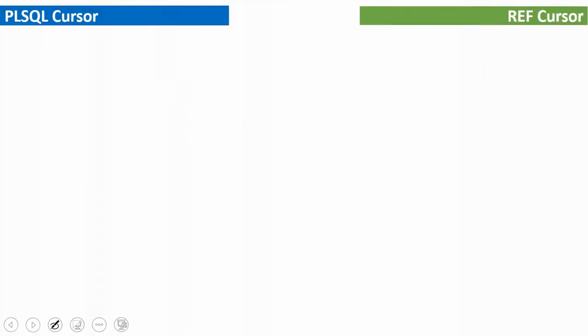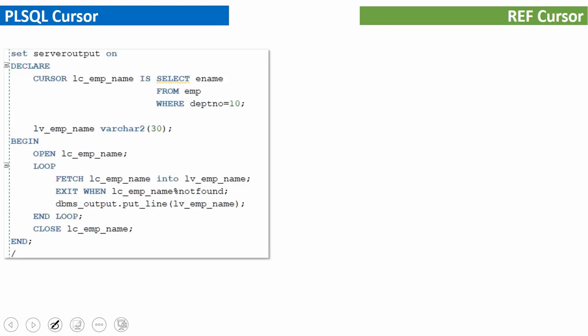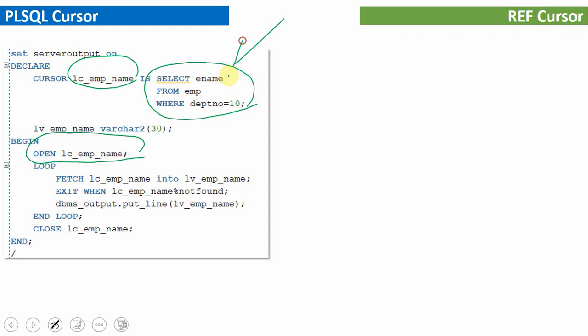Let us start with our first example, the first difference. We will see one example for a PL/SQL cursor or a normal cursor and one more example for ref cursor. Here is a simple anonymous block where I have declared a cursor variable called LC_EMP_NAME for a select statement like select ename from employee where department equal to 10. This cursor is going to hold a list of employees working in department 10. The moment this cursor is opened, this cursor location will hold the results of the query. The key information here is that in a PL/SQL named cursor or a normal cursor, the query is associated to the cursor name.